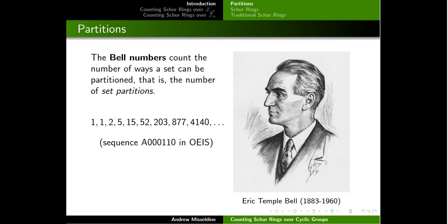To give some motivation on why we want to count Schur rings in the first place, let me compare this to a comparable problem from combinatorics. The famous Bell numbers are a sequence of numbers which counts the number of ways one can partition a set of n elements — these so-called set partitions.